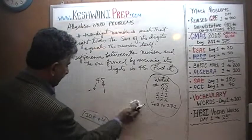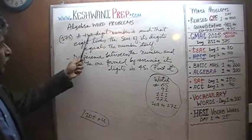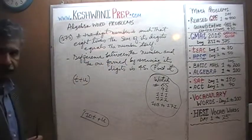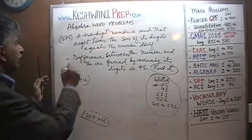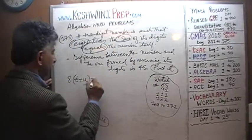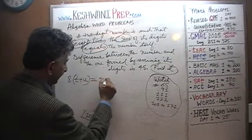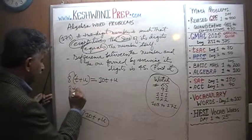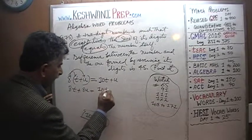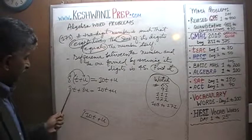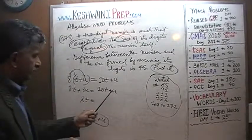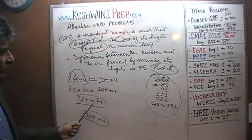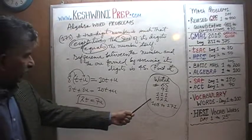Our two-digit number is 10T plus U. The problem says 8 times the sum of the digits equals the number itself. The sum of the digits is T plus U, so we write 8 times (T plus U) equals 10T plus U. Expanding: 8T plus 8U equals 10T plus U, which simplifies to 2T equals 7U. We'll leave that for now and get our second equation.